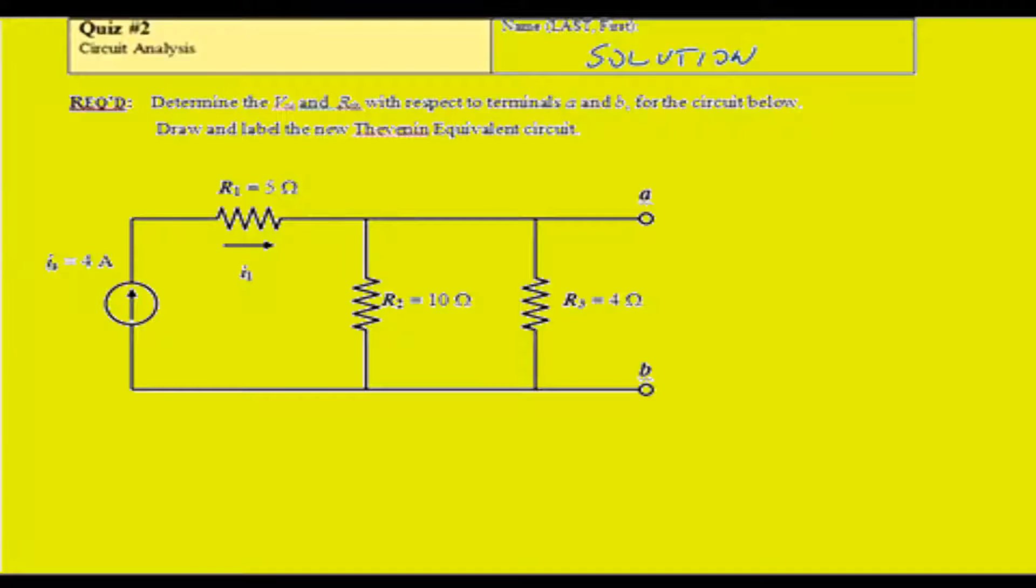In quiz number two, you were asked to find the Thevenin equivalent circuit at AB. To get V-Thevenin, you want to find the open circuit voltage between A and B. That's V-Thevenin.